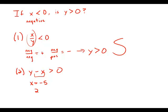For example, 2 minus negative 5 is 7. That's greater than 0. But negative 1 minus negative 5 is positive 4. That's also greater than 0.